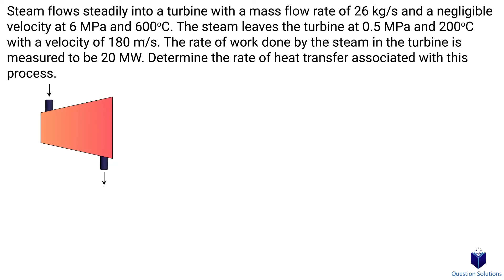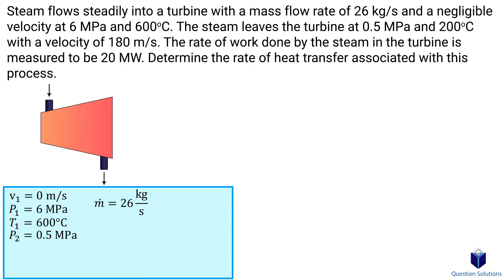In this question, we have steam that flows into a turbine and we need to figure out the heat transfer due to this process. Let's write down what we know. The steam flows in at a rate of 26 kg per second with a negligible velocity. The initial pressure is 6 MPa and the temperature is 600 degrees celsius. The steam leaves the turbine at 0.5 MPa and a temperature of 200 degrees celsius. The velocity is now 180 meters per second.